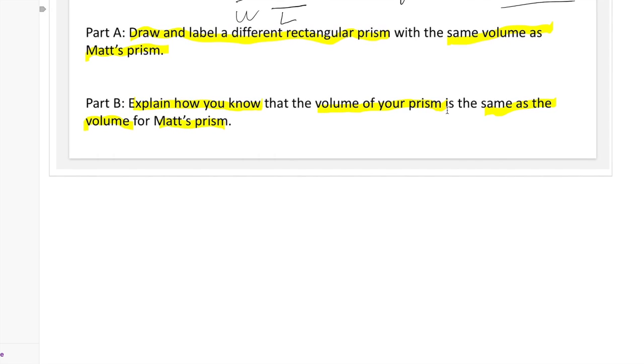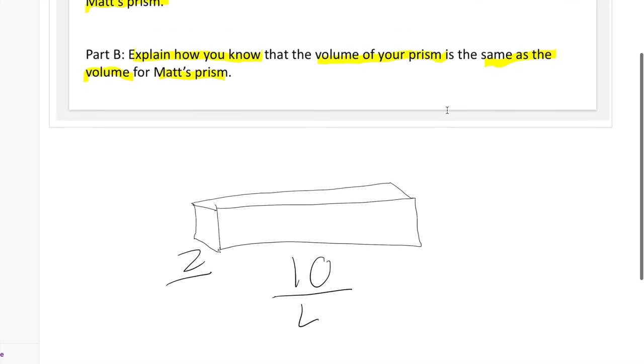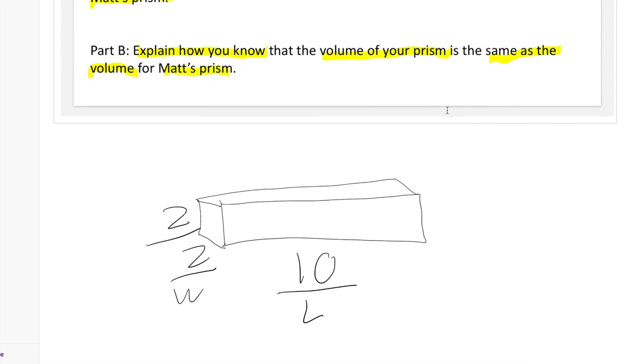To make my own prism, I will need to find three different numbers to make 40 cm cubed. I tried a few different combinations, and the one that worked best was 10 for the length, 2 for the width, and 2 for the height.